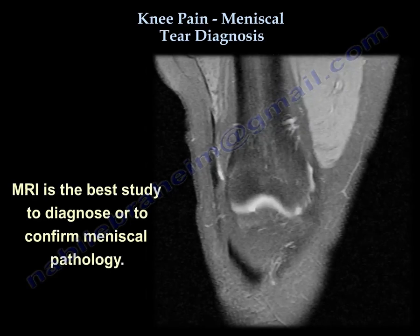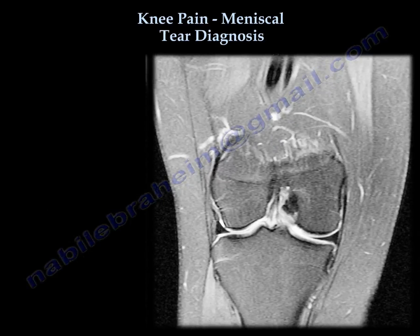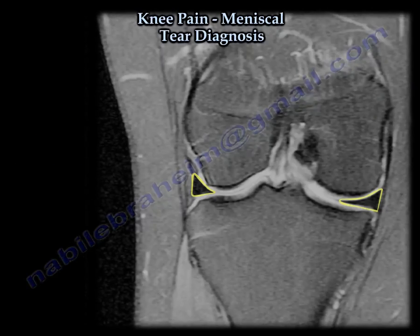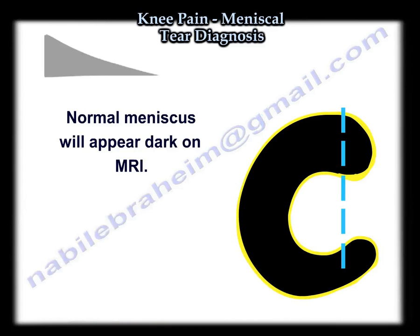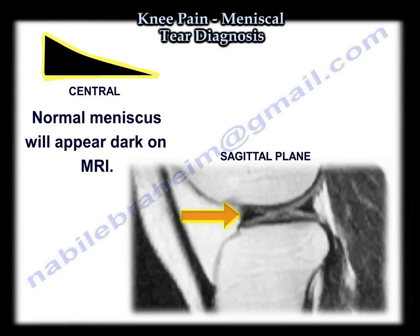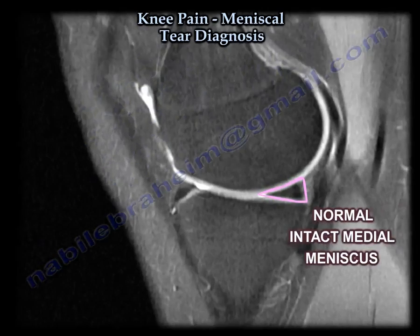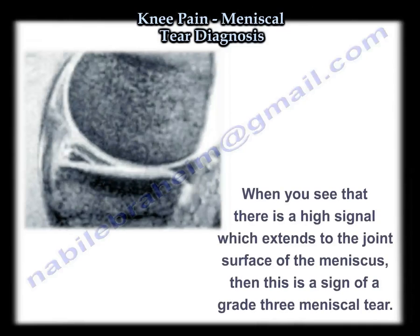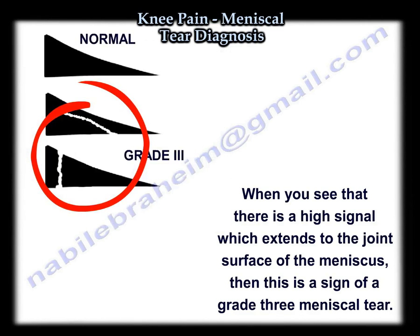The MRI is the best study to diagnose or confirm meniscal pathology. A normal meniscus will appear dark. Here is a section through the meniscus — you can see it goes from peripheral to center and shows the shape of the meniscus. When you see a high signal extending to the joint surface of the meniscus, that is a grade three tear.